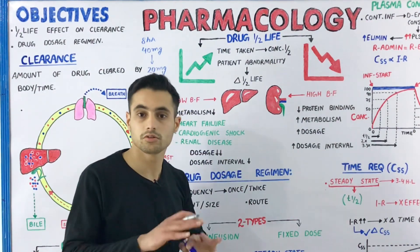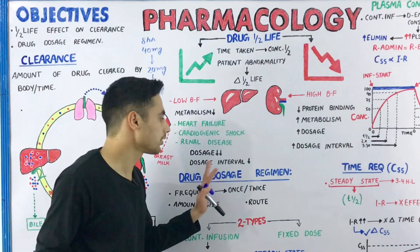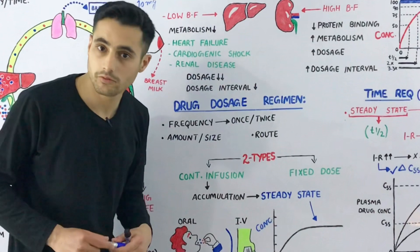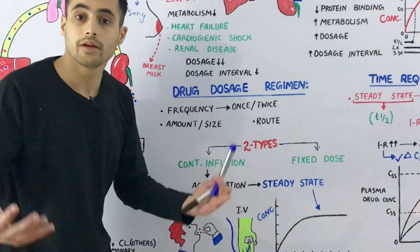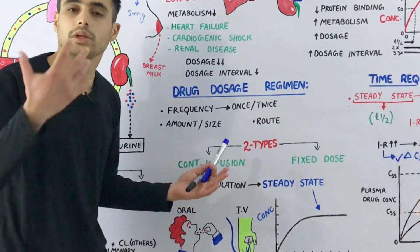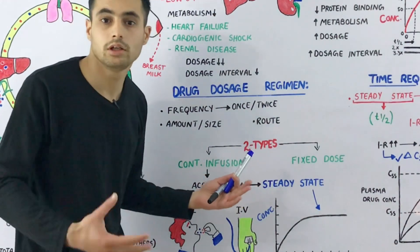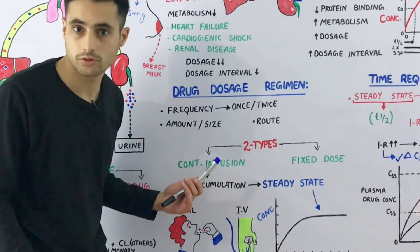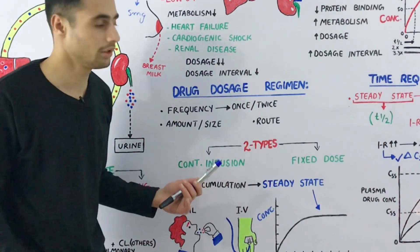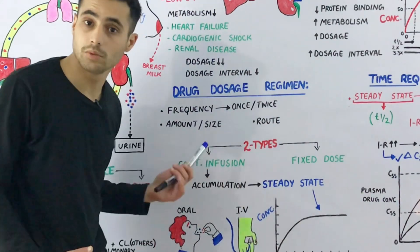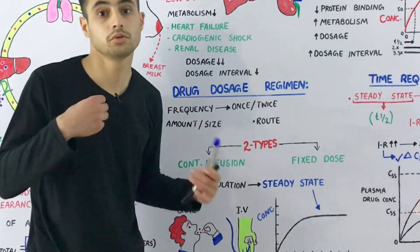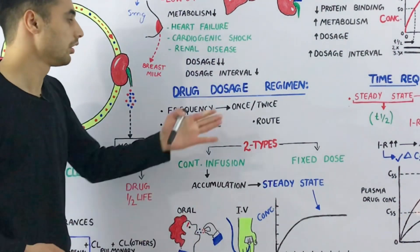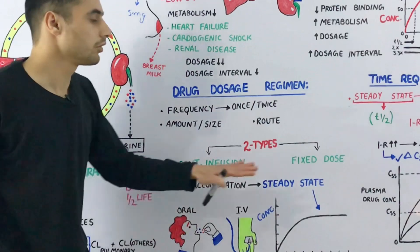Now, the drug dosage regimen — in simple words, it is the frequency of the drug, the size and amount of the drug (how much drug should be taken daily, such as twice daily or once daily), and the route of administration — for example, 40 milligrams taken orally, or via intravenous (IV) route, or intradermal route.